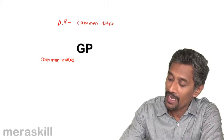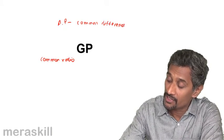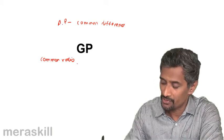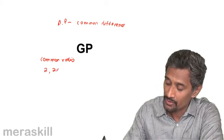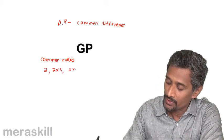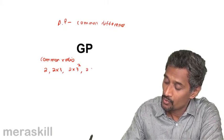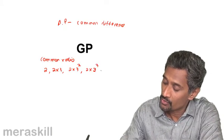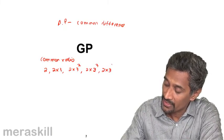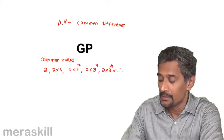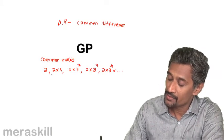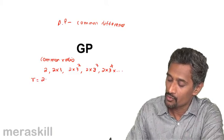In a GP, you have the consecutive terms related by common ratio. So you have 2, then 2 into 3, then 2 into 3 squared, 2 into 3 cubed, 2 into 3 raised to 4. So all these are such that the common ratio R is 2 into 3 by 2.